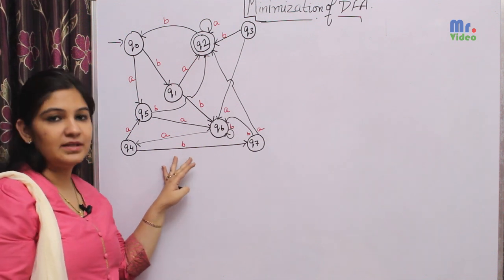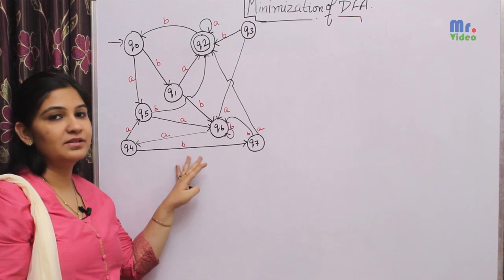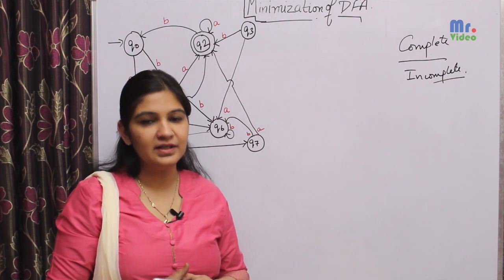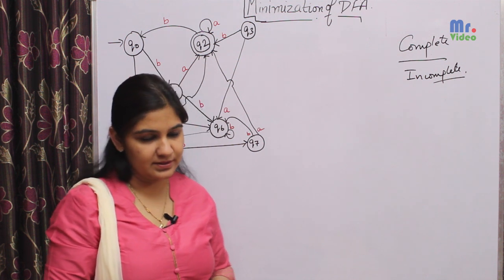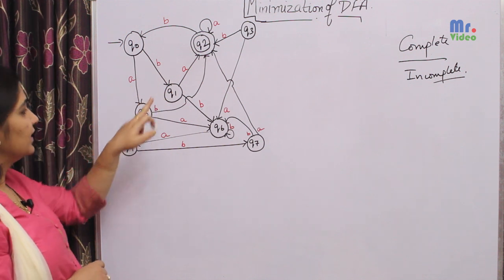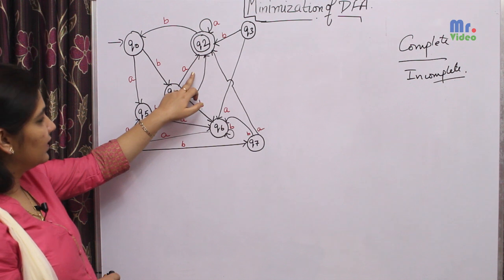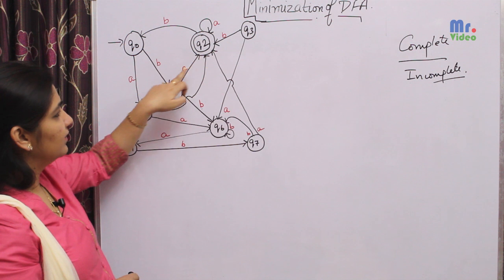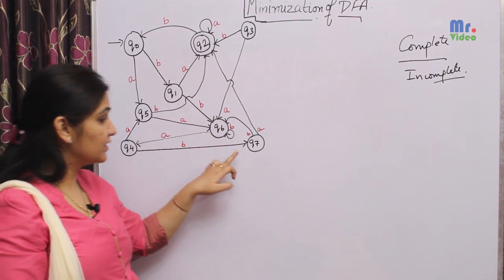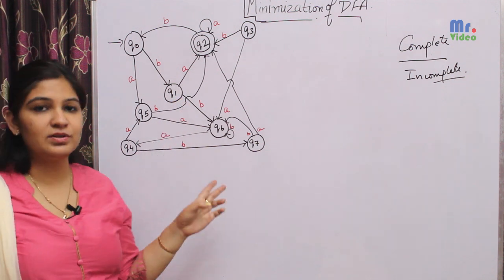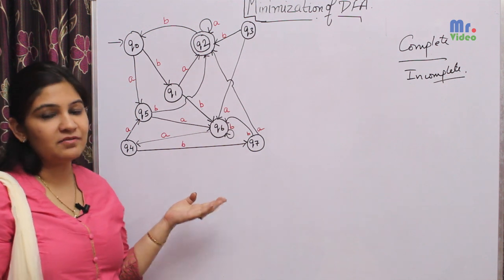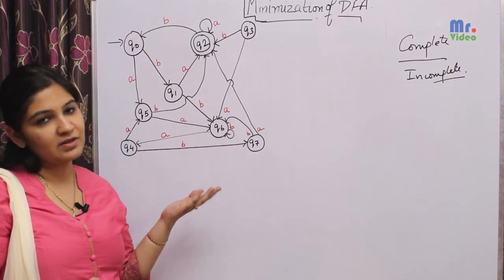For example, we have to minimize the given DFA. Our first step should be to determine whether the given DFA is complete or incomplete. A complete DFA means that for each and every state, we should have a transition for all the input alphabets from that particular state. Checking Q0, we have a transition for A and for B. From Q1, we have transitions for A and B. Similarly for Q2, Q3, Q4, Q5, Q6, and Q7 — from each and every state we have transitions for all input alphabets. So we declare this a complete DFA. An incomplete DFA is one which may miss some transitions for the given input alphabets.